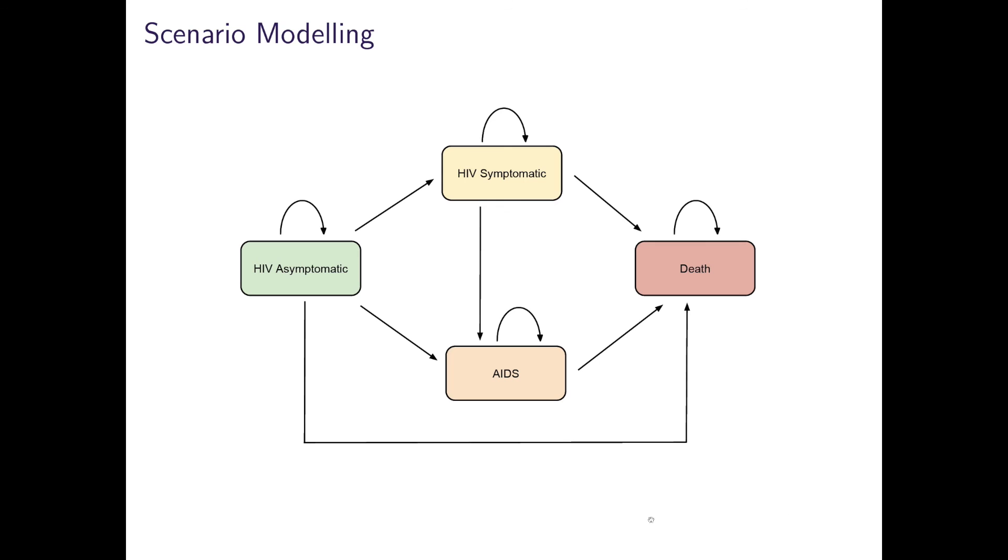Say, for example, a new drug was found or discovered that allowed patients to stay longer in the AIDS state. Then we simply change or modify the transition probability matrix to reflect this scenario and rerun the models. Or that a cure was found for AIDS that allowed us to modify entirely the state space diagram and have arrows moving back through the states to a new state of cured.